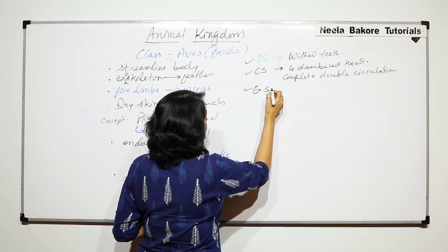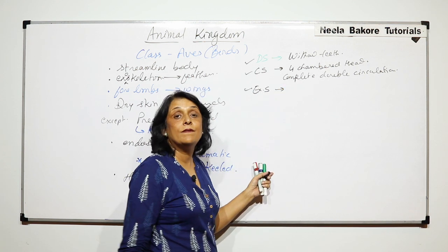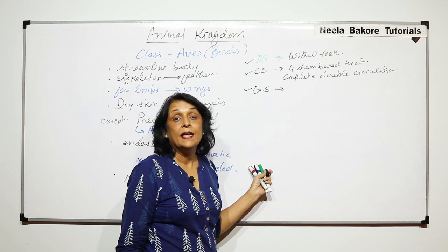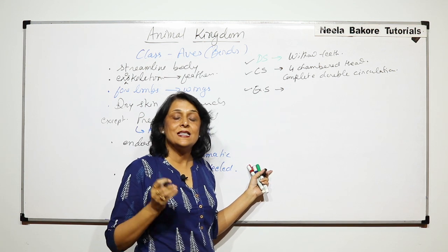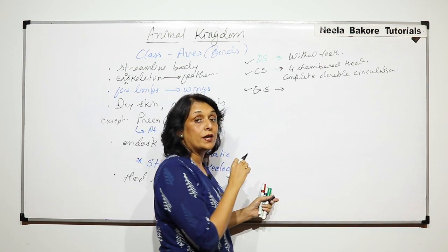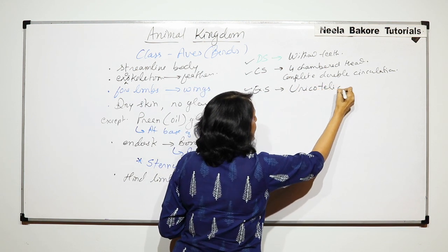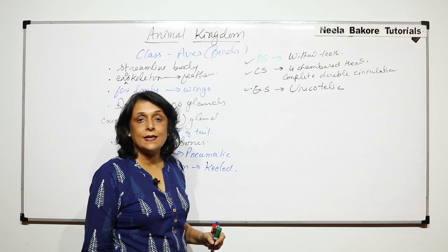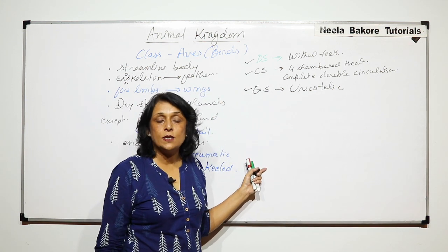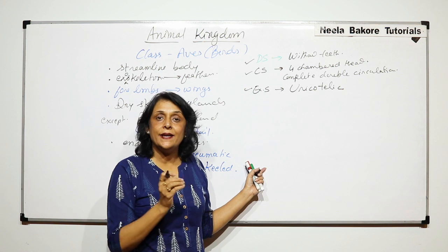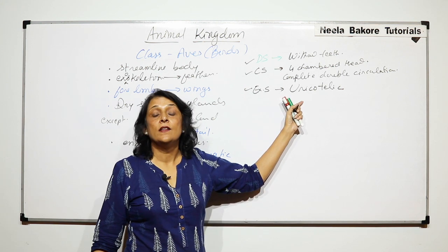Excretion or excretory system, they have kidneys but they have to minimize the loss of water and energy and that is why they are uricotelic. They excrete uric acid. Bird droppings normally contain some whitish part in it and that whitish part is the uric acid.